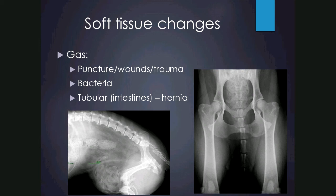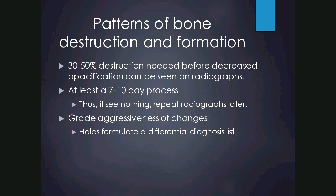For bone changes to be seen, 30 to 50 percent of bone destruction is needed before normal mineral opacity is lost, and this takes at least seven to ten days. Radiographs are not very sensitive for early or subtle disease — if you see nothing, repeat the radiographs 10 to 14 days later. Characteristics of the bone changes also help determine how aggressive a lesion is and thereby guide the differential diagnosis.